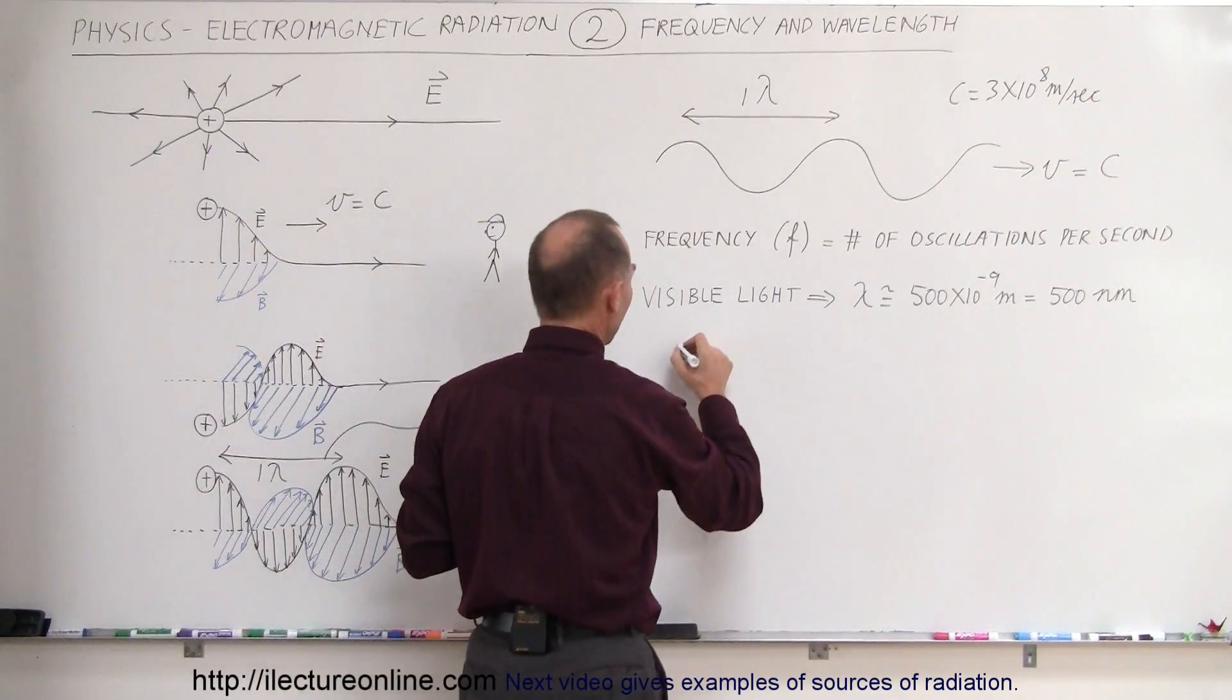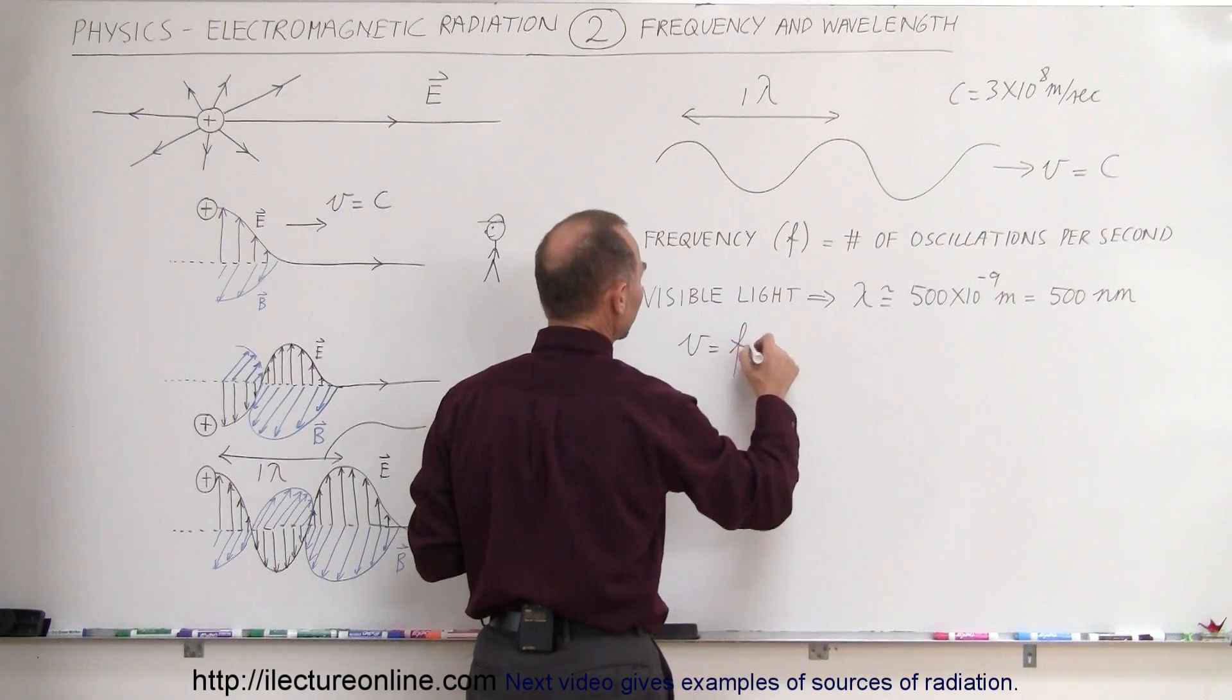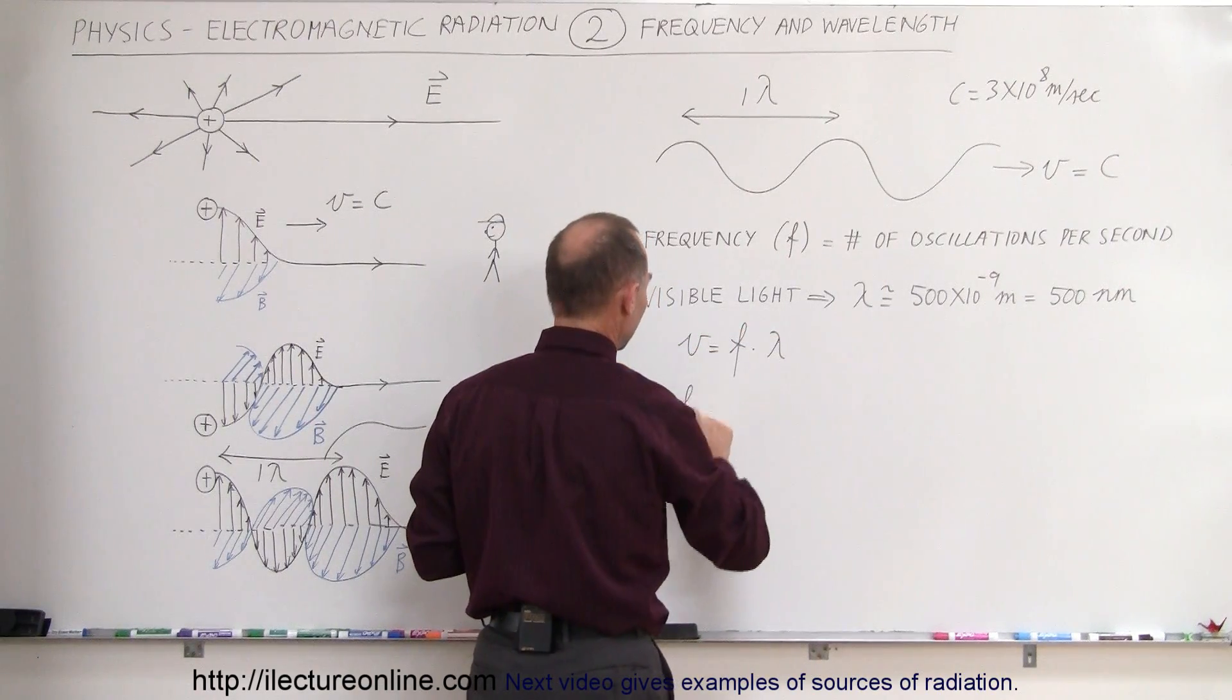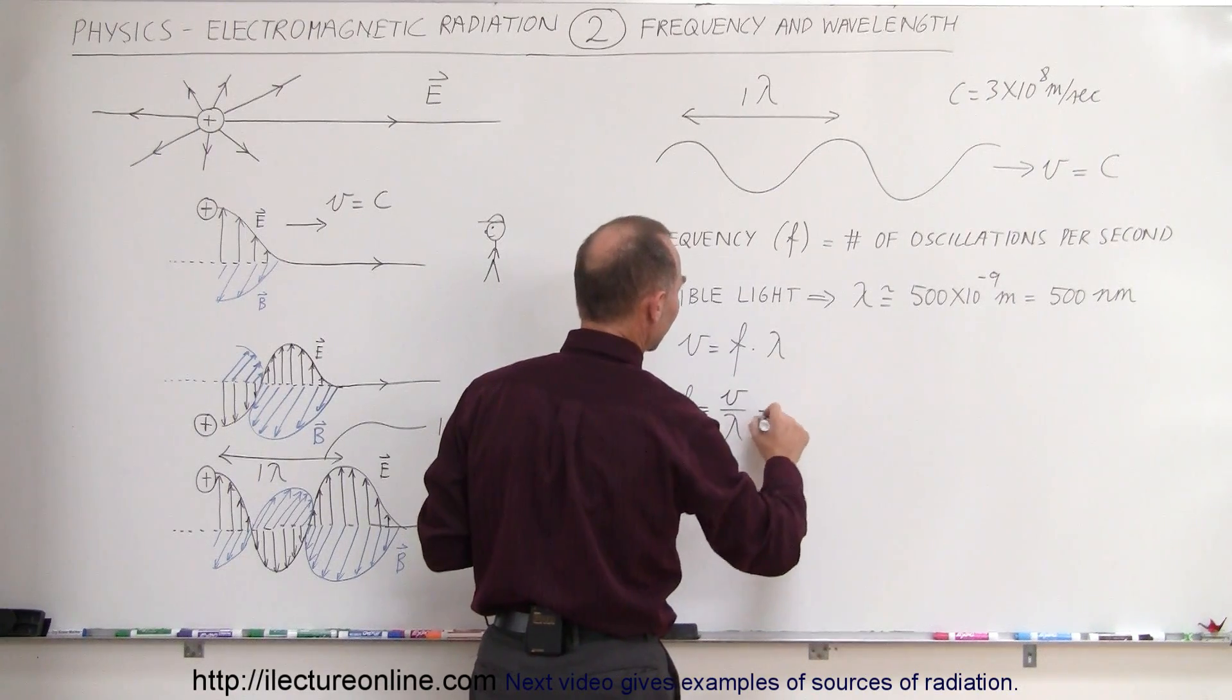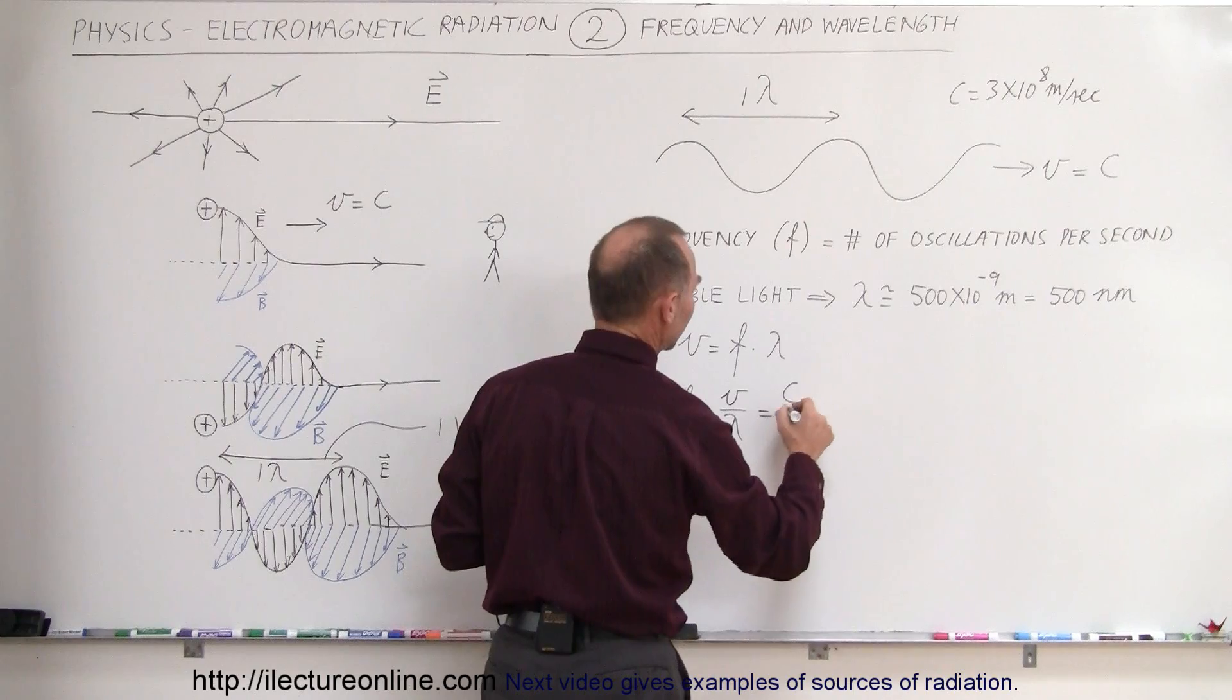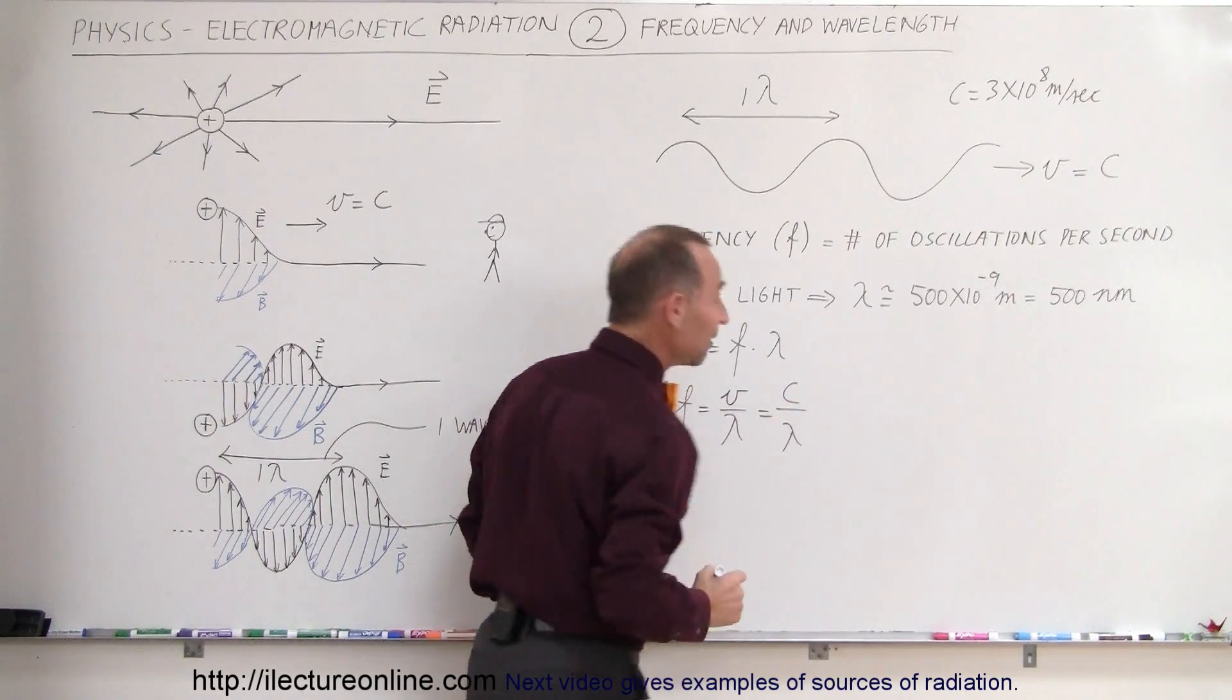We know that the velocity of a wave is equal to the frequency times the wavelength. So, we can see that the frequency is equal to the velocity divided by the wavelength. And, of course, with electromagnetic radiation, that's the speed of light divided by the wavelength.